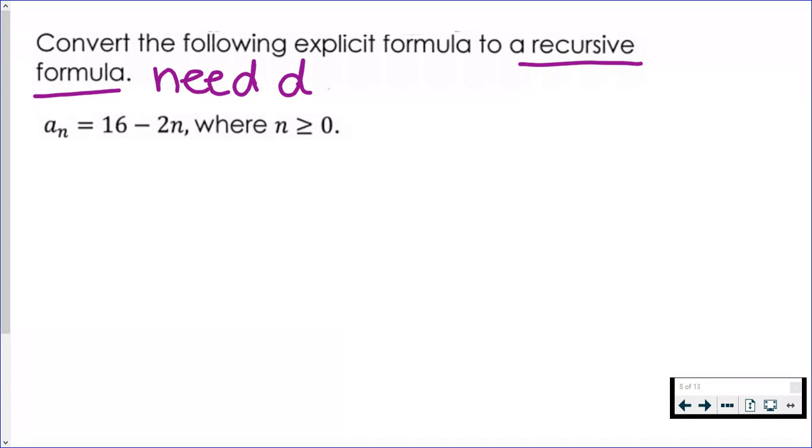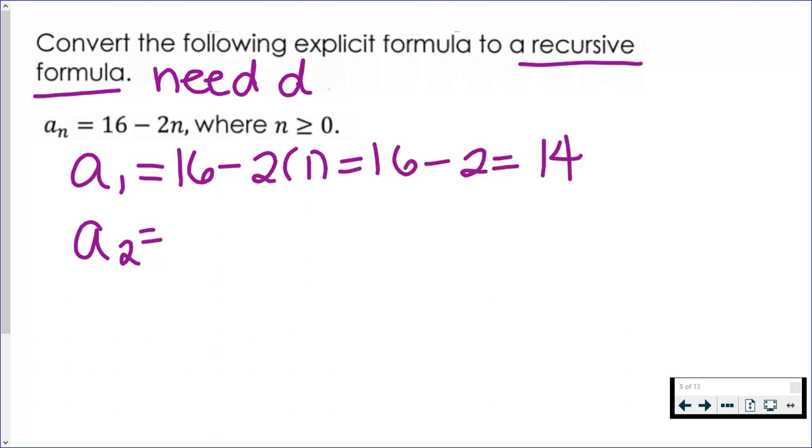So what I'm going to do is find the first term and the second term. If I have two terms that are next to each other, I can figure out how I got from the first term to the second term and that will be my common difference. So to find the first term, n would be 1, and then you simplify. So the first term in this sequence is 14.